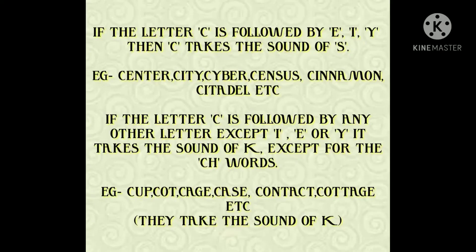The next most important part is: why does C sometimes take the 'S' sound and sometimes the 'K' sound? There is a rule to this. If the letter C is followed by E, I, or Y, it takes the 'S' sound. For example, City — C-I-T-Y — C is followed by I, so it takes the 'S' sound. Center — C-E-N-T-E-R — C is followed by E, so it takes the 'S' sound. Or Cycle — C is followed by Y, so it takes the 'S' sound.